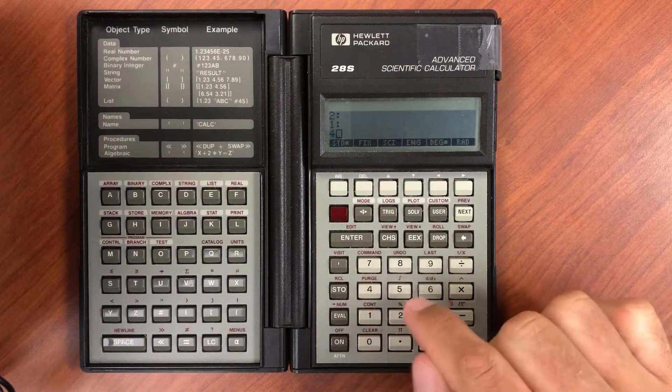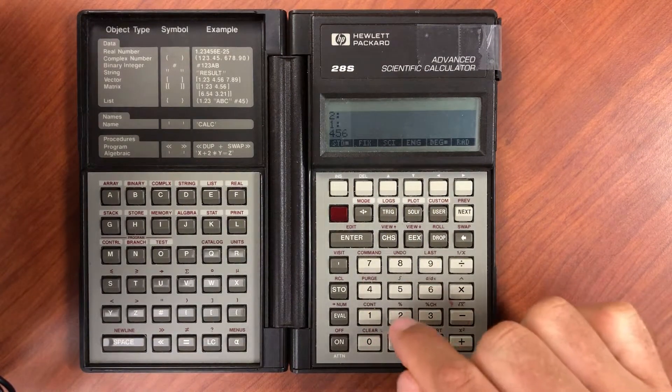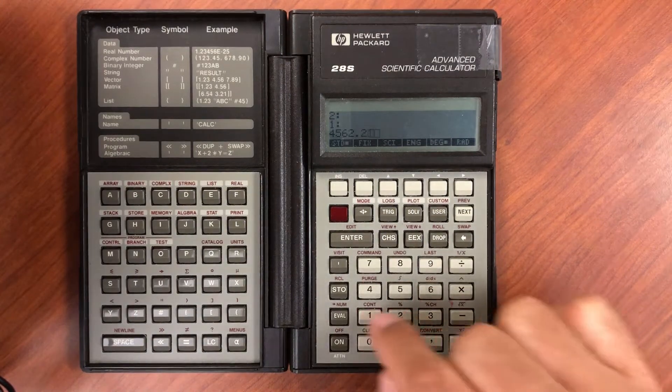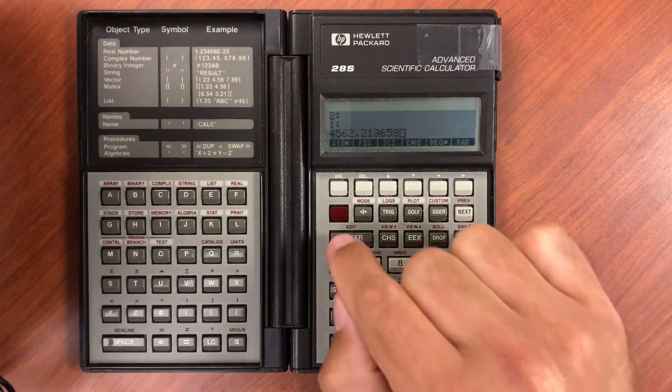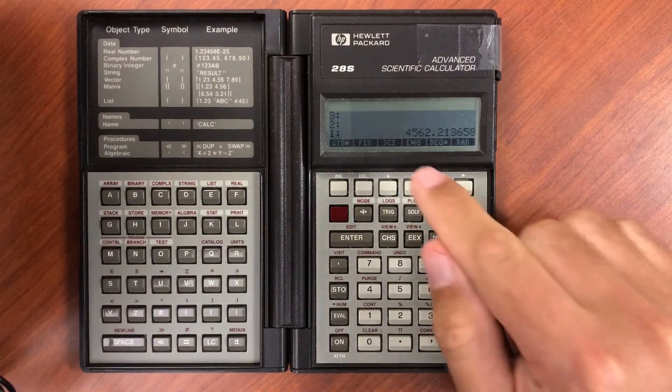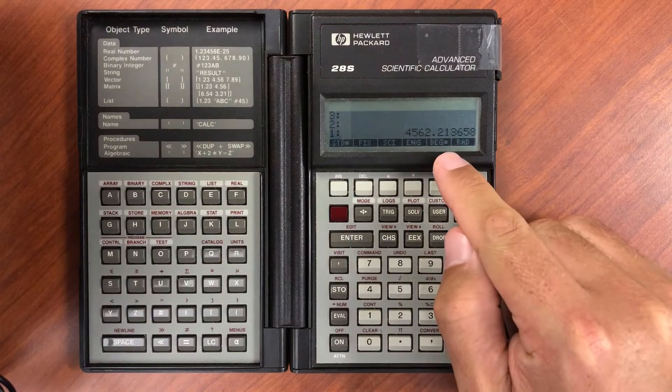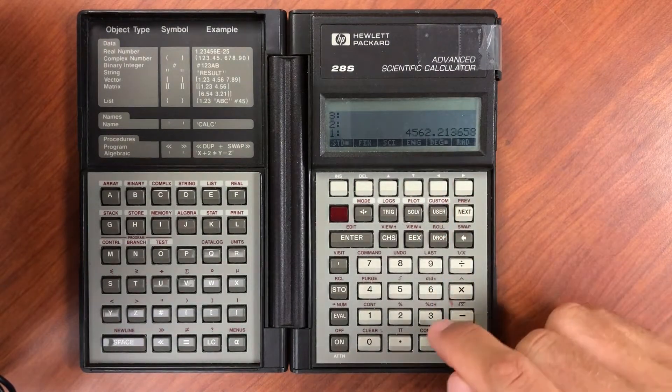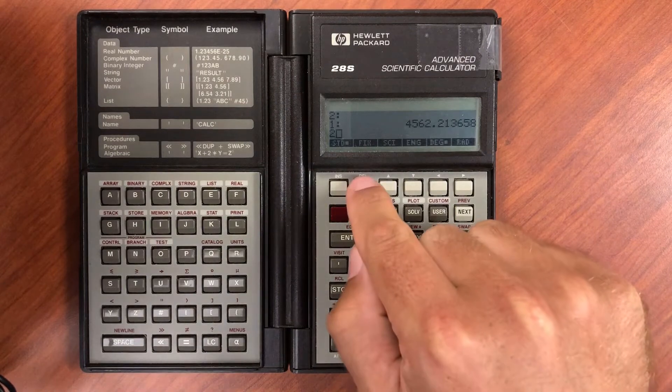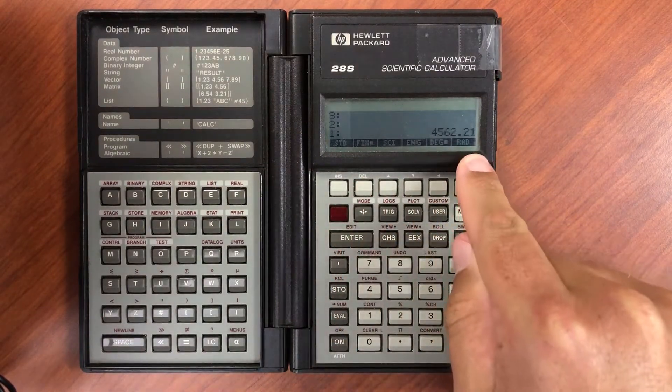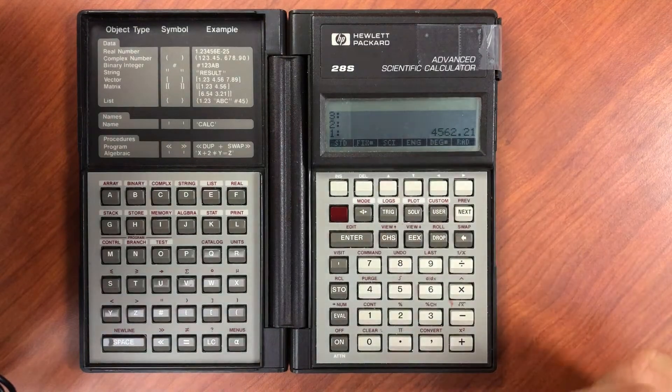Let's say I have a number like 45. Standard display will try to display as many digits as it can. With fixed mode you want to fix it to a certain number of decimal places. So let's say I want two decimal places - enter in two and it fixes it to two decimal places. It just rounds it for display purposes.